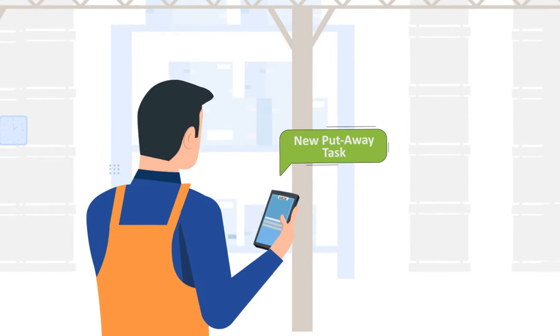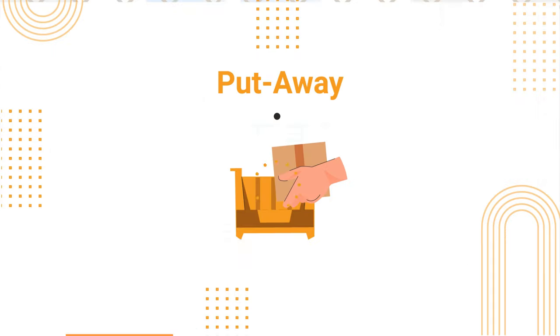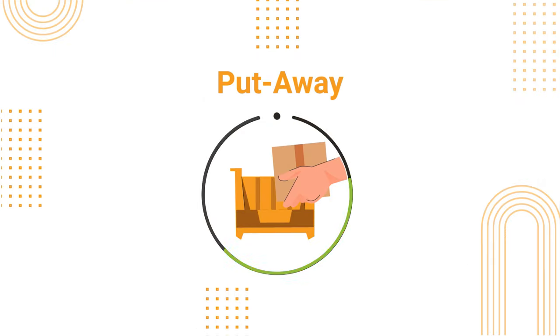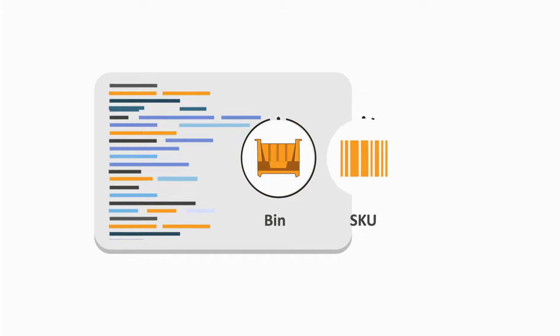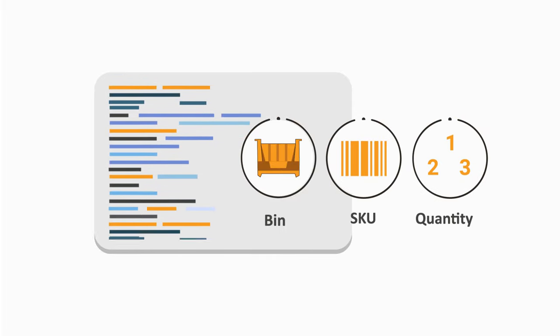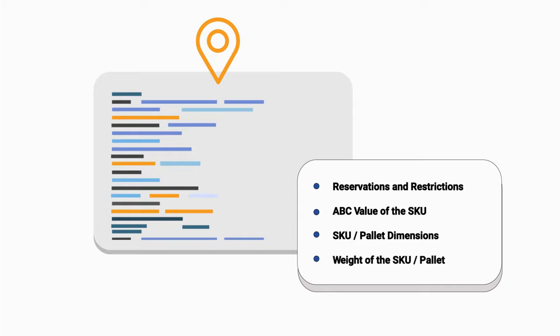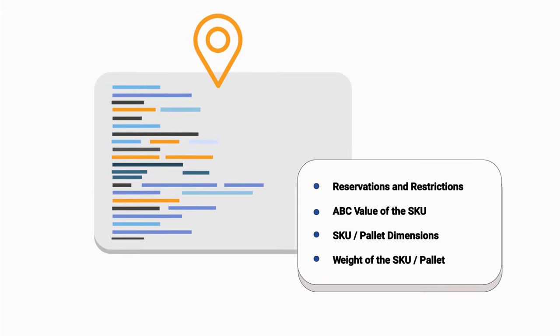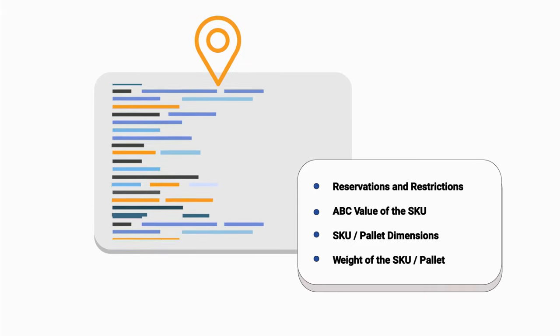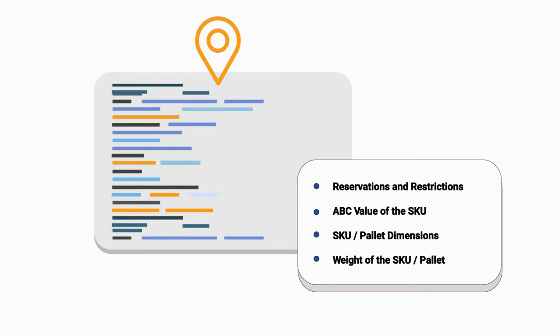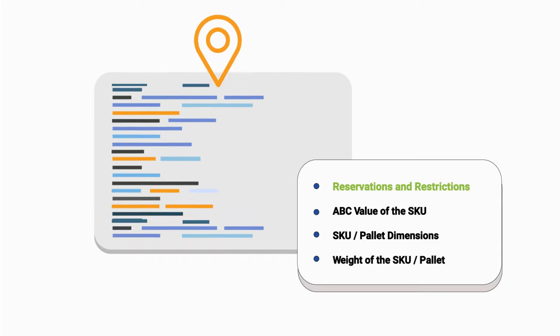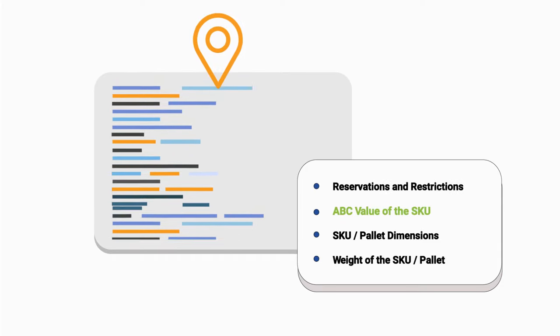An automated guidance algorithm is employed by the system to decide in which bin, which SKU, and what quantity can be placed. The location suggestion algorithm considers the following points, among others, to decide the bin: reservations and restrictions if any, and the ABC value of the SKU.